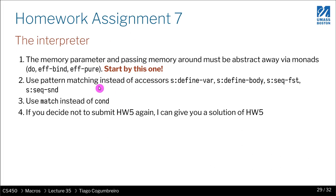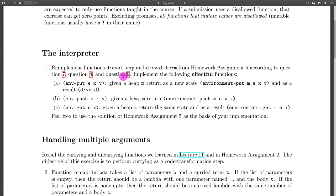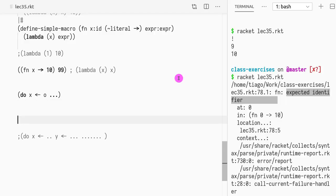So the first bit is writing the interpreter. So I have here the PDF of homework seven. You're going to be asked to re-implement deval exp and deval term. But now with support for effectful functions. So the first change that you need to do is really to change your deval exp, which takes a memory and an environment, right?